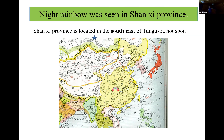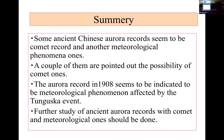Summary: Some ancient Chinese aurora records seem to be comet records, and another meteorological phenomenon — a couple of them are pointed out as possibly comet-related. The aurora record in 1908 seems to indicate a meteorological phenomenon affected by the Tunguska event. Further study of ancient aurora records in connection with comet and meteorological ones should be done. Thank you very much.